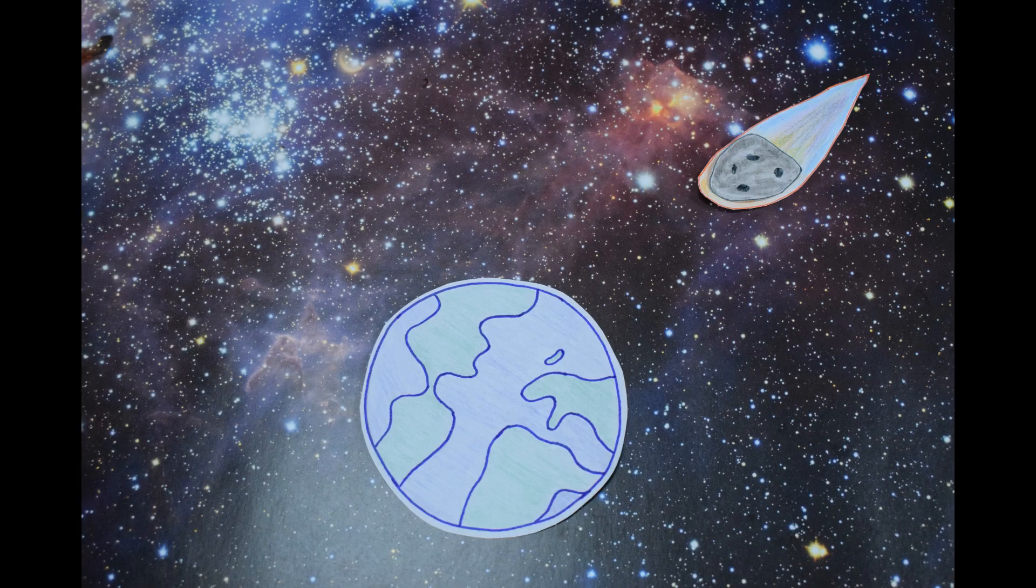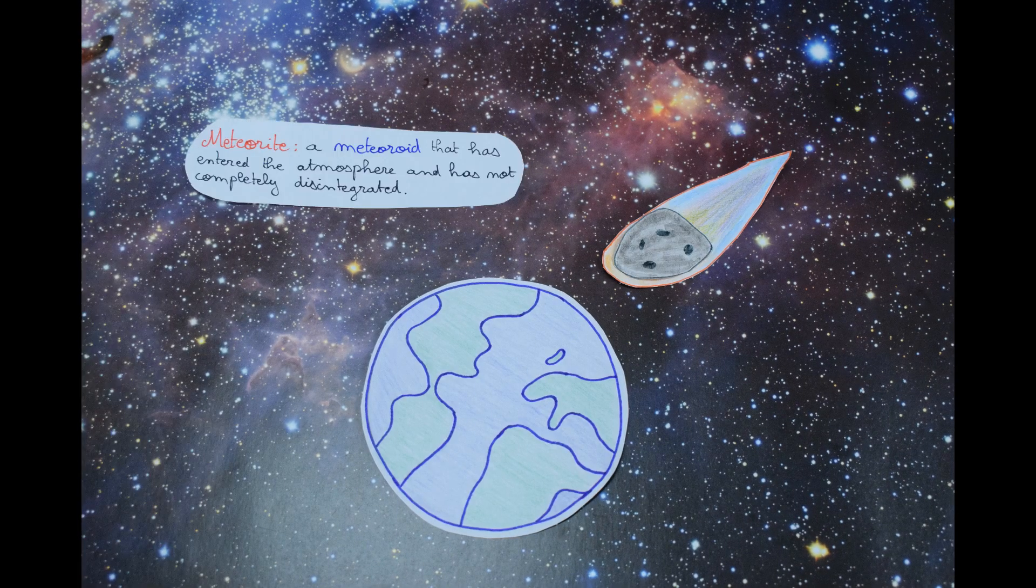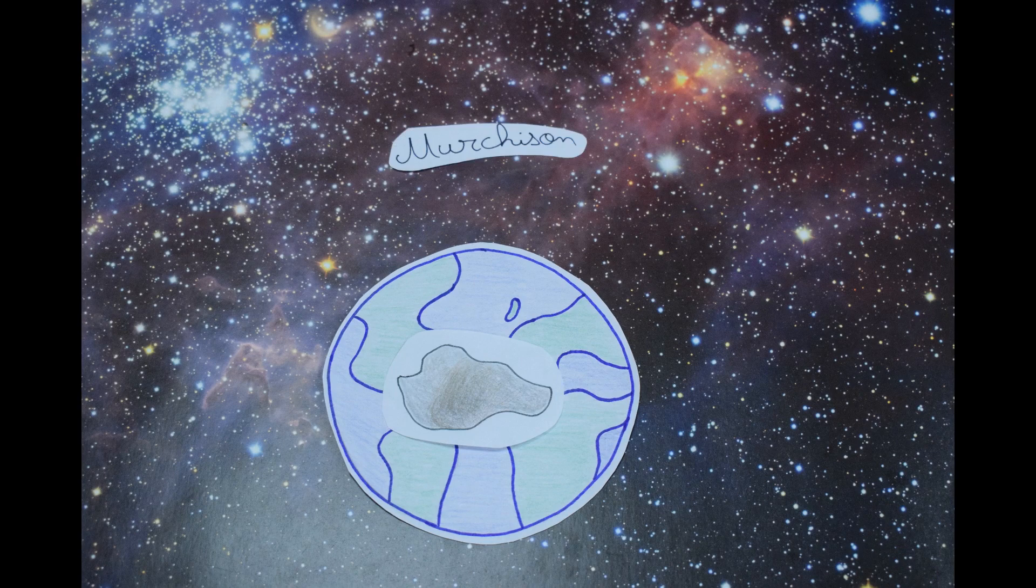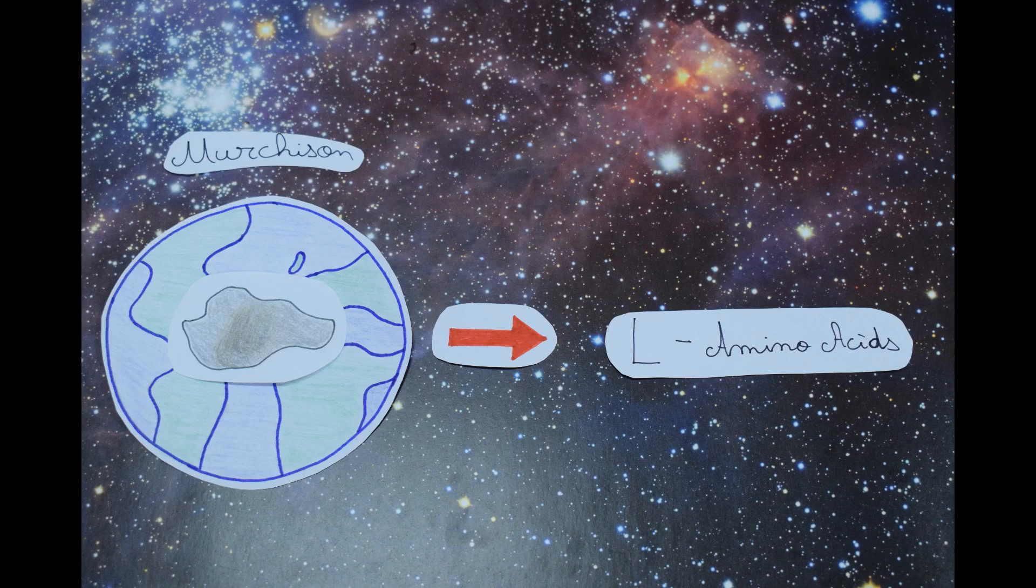However, what can also be studied are meteorites, so small solar system bodies that landed on Earth. Scientists analyzed the material on a meteorite that landed on Earth in 1969 in Australia. They discovered a dozen amino acids where most of them were levorotatory.